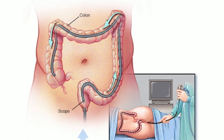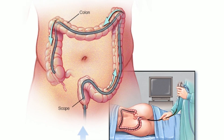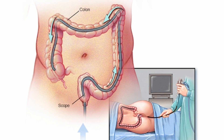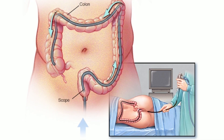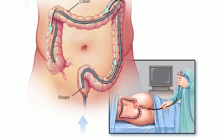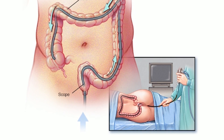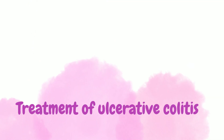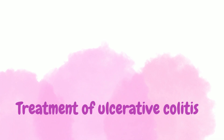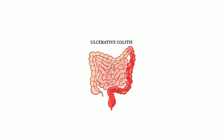During a colonoscopy, a long, flexible tube is introduced into the rectum. A tiny video camera at the tube's tip allows the doctor to see the whole interior of the colon.